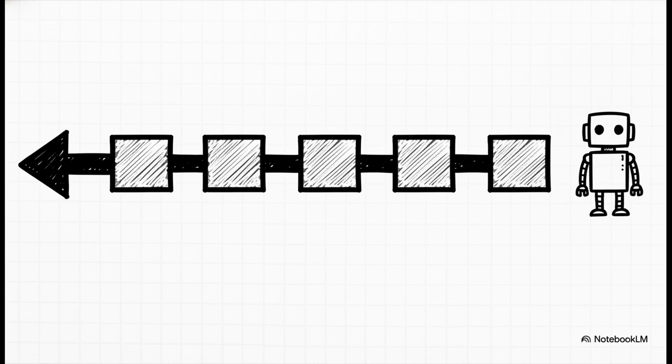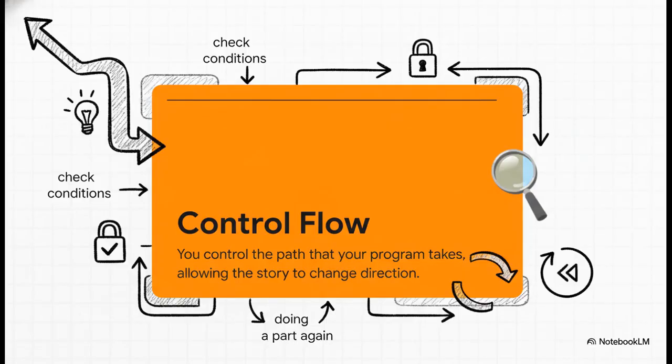It's predictable, sure, but it's not very smart. This is where you come in. Control flow is your director's toolkit. It gives you the power to change the plot on the fly. You can tell the program, hey, wait a second, check this first. Or you know what? Go back and do that scene again. You're not just writing a script anymore. You are directing the action.